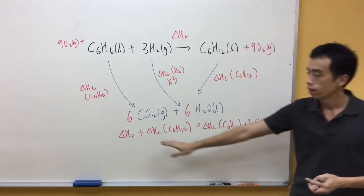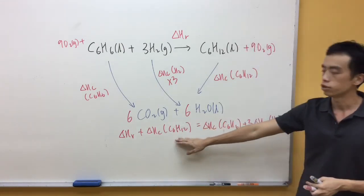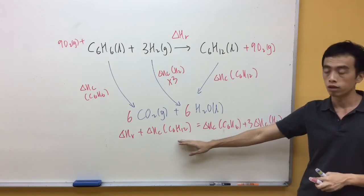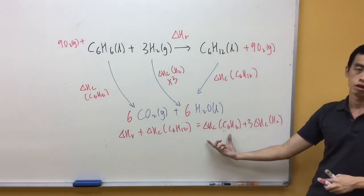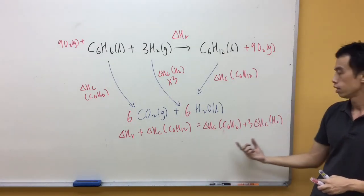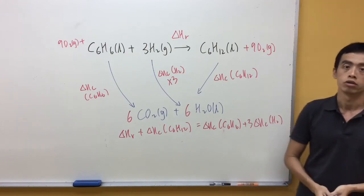According to Hess's law, the enthalpy change of the reaction plus the enthalpy change of combustion of C6H12 will be equal to combustion of C6H6 plus 3 times combustion of hydrogen.